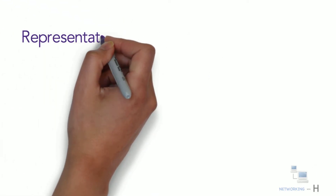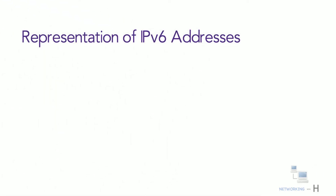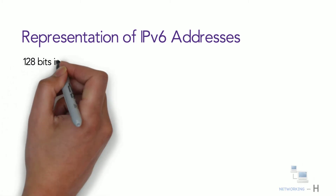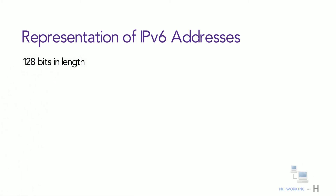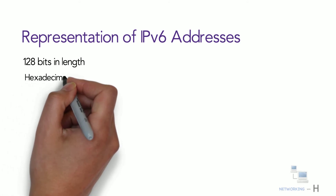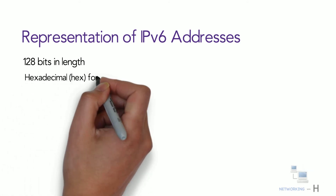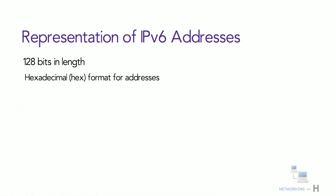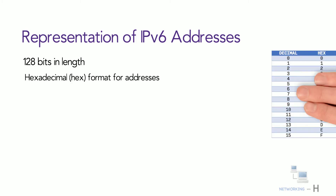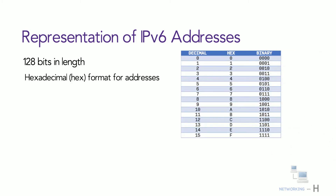Let's see how we can represent the IPv6 address. IPv6 addresses are 128 bits in length and use a convenient hexadecimal or hex format. In case you are not aware what hex values are, this table can help you. Decimal 0 to 9 are represented as 0 to 9 in hex, and decimal 10 to 15 are represented as A to F in hexadecimal.